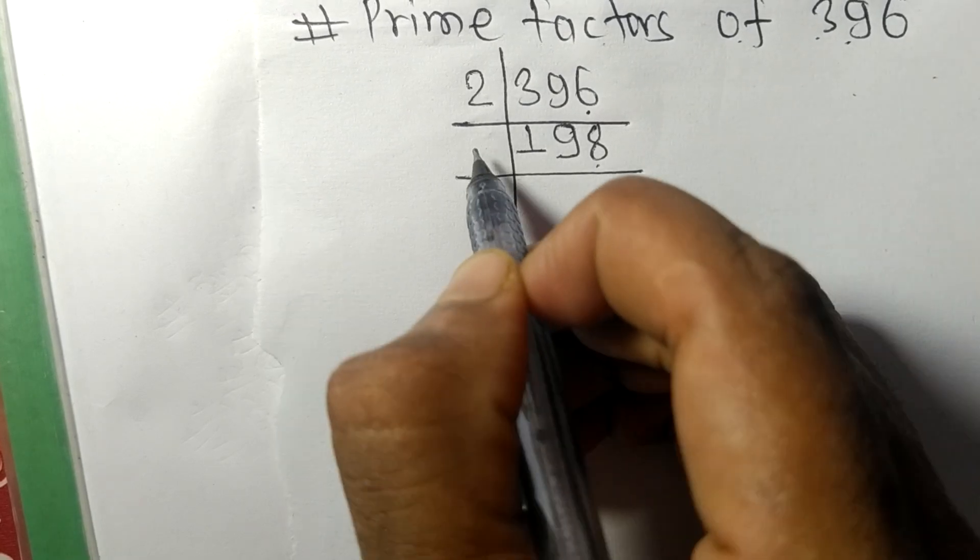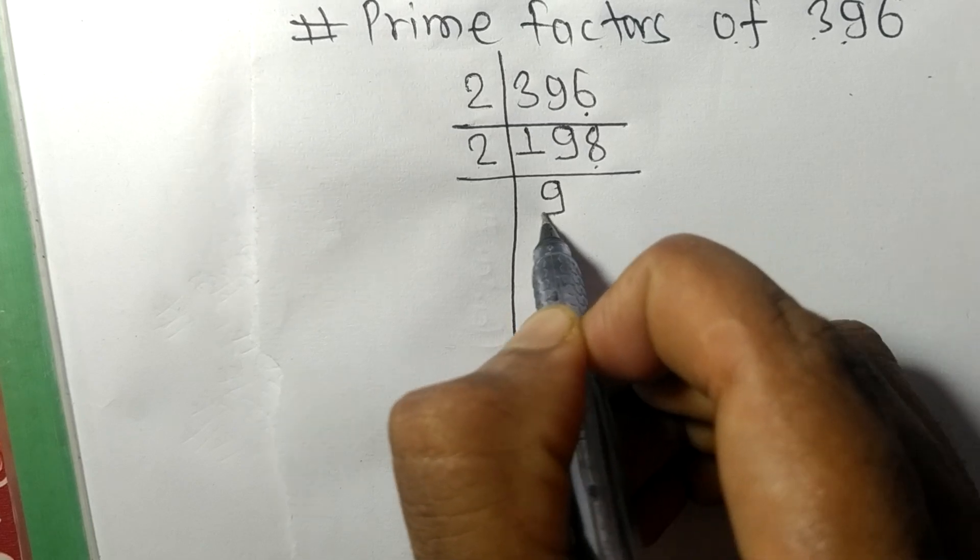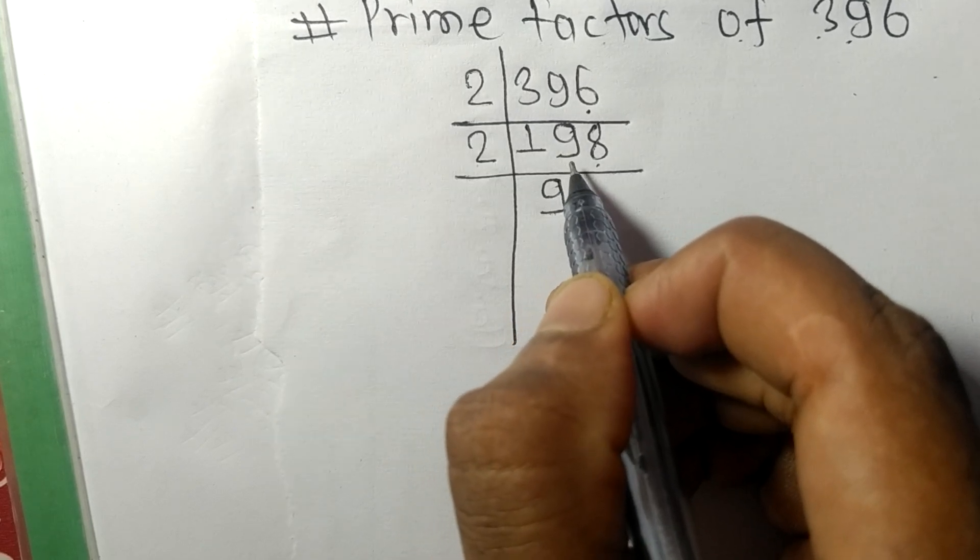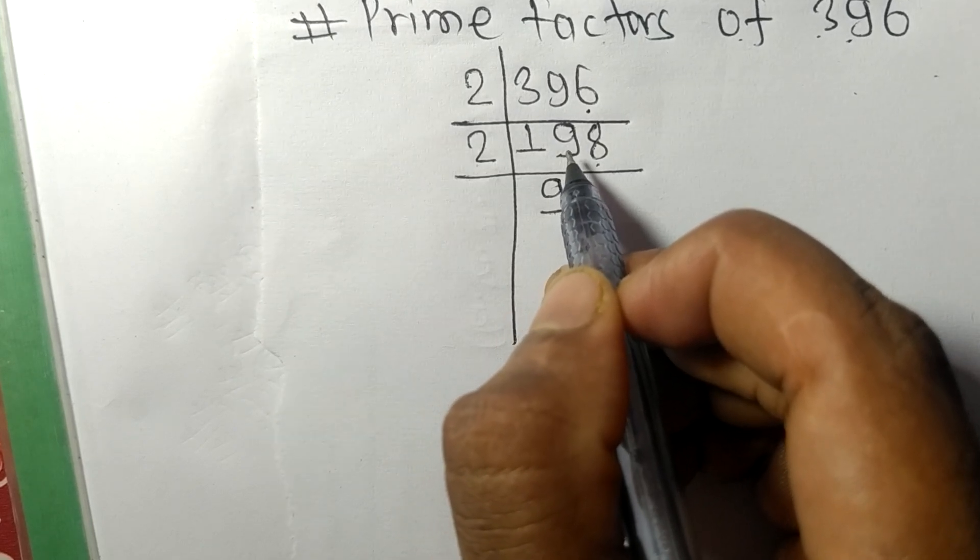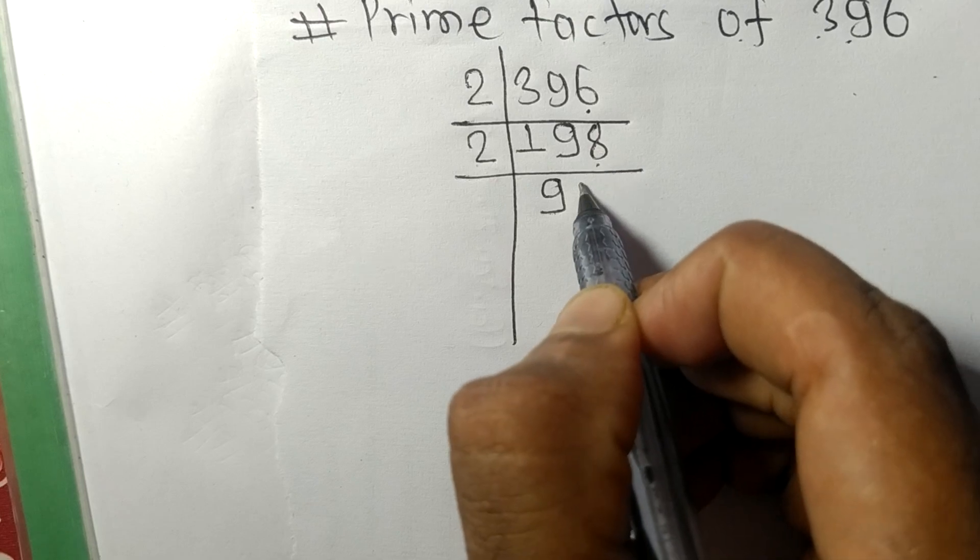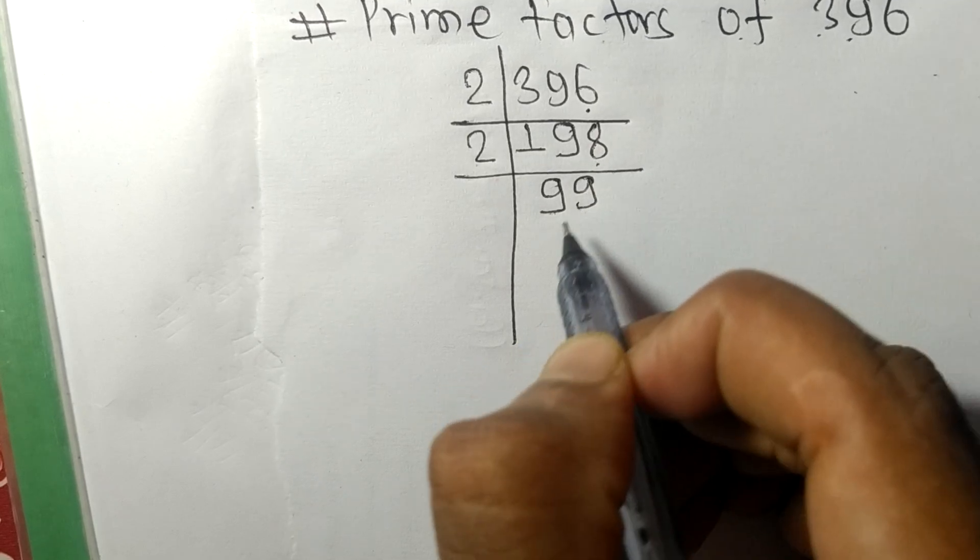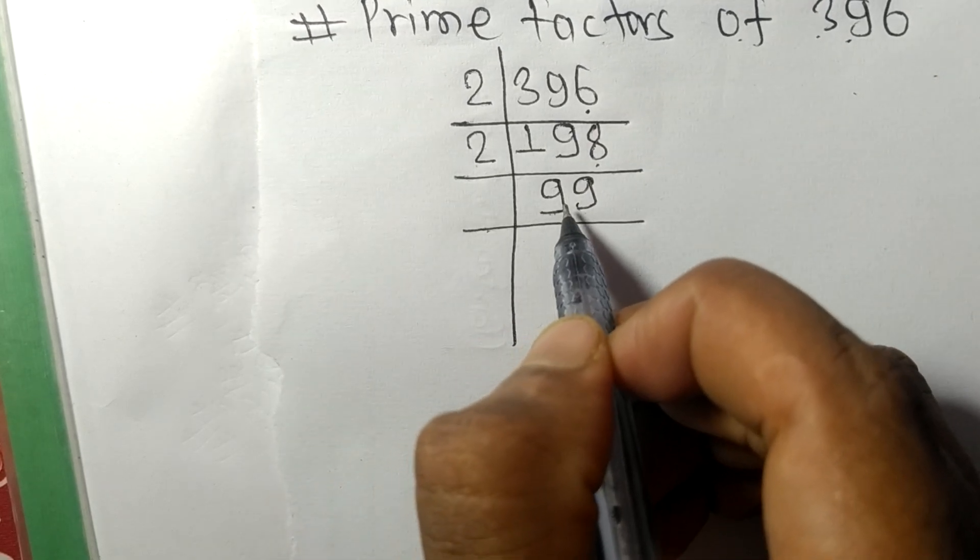It is again divisible by 2. So 2 times 9 equals 18, remainder 1. So 1, 8, 18. 2 times 9 equals 18. Now we got here 99.